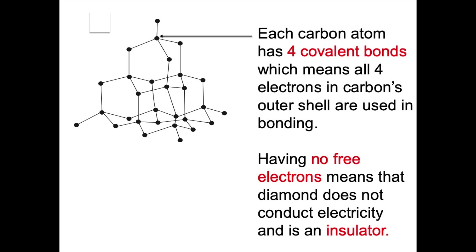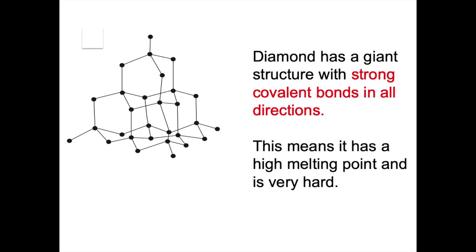The fact that diamond has a giant structure with strong covalent bonds in all directions means that diamond has an extremely high melting point — it would take thousands of degrees Celsius to melt it — and also gives diamond its hardness. Diamond is the hardest material known to man. The reason for these two properties is that it would take lots of energy to break the many strong covalent bonds that exist in all directions in this structure.